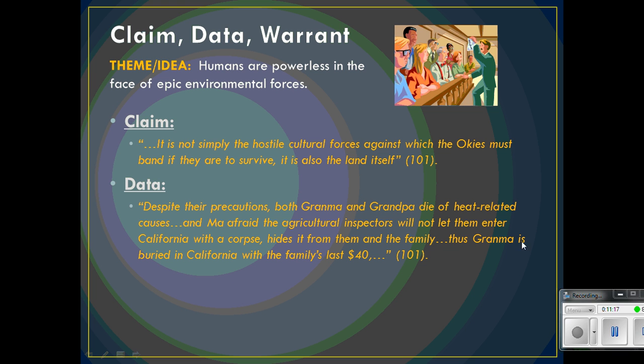She supports it on page 101 again when she explains the situation with Grandma and Grandpa dying. Here is the information about the environmental forces and the family being sort of powerless to deal with that, and also the symbolism of Grandpa dying outside of California — leaving the old in the past — while Grandma is buried in California, moving the family forward even in death. There's a sense of irony there.